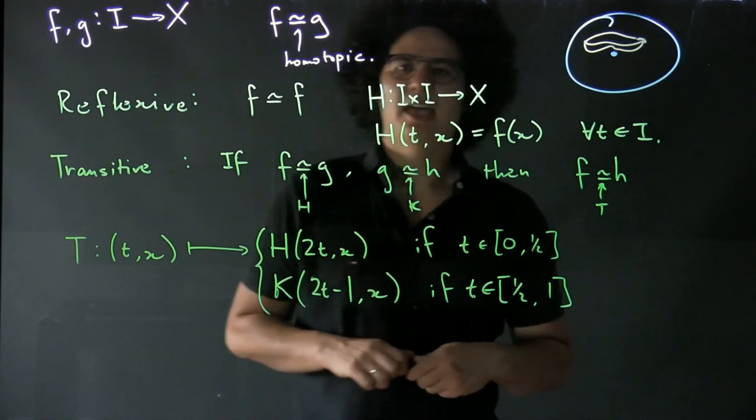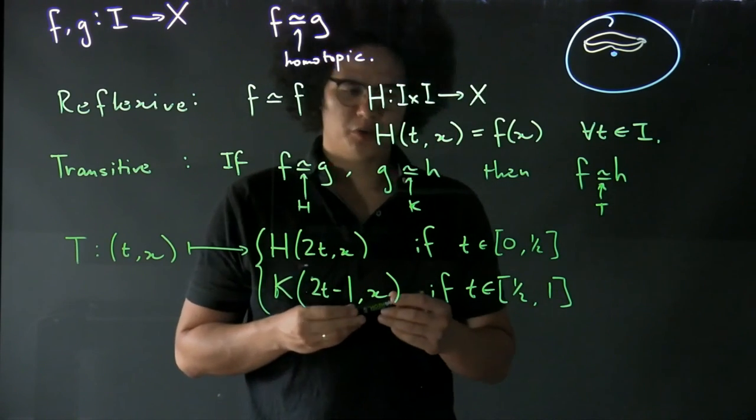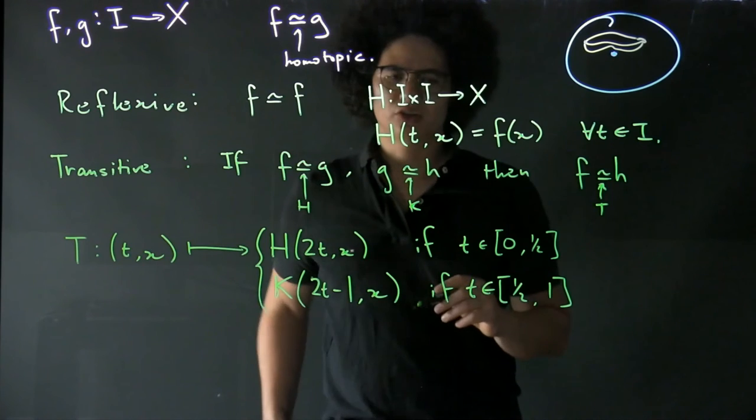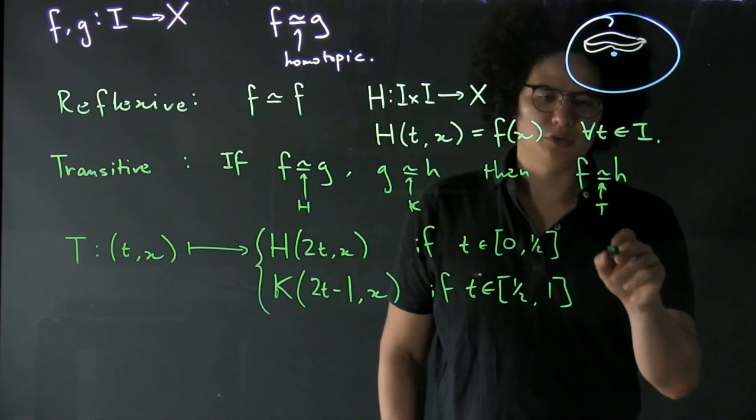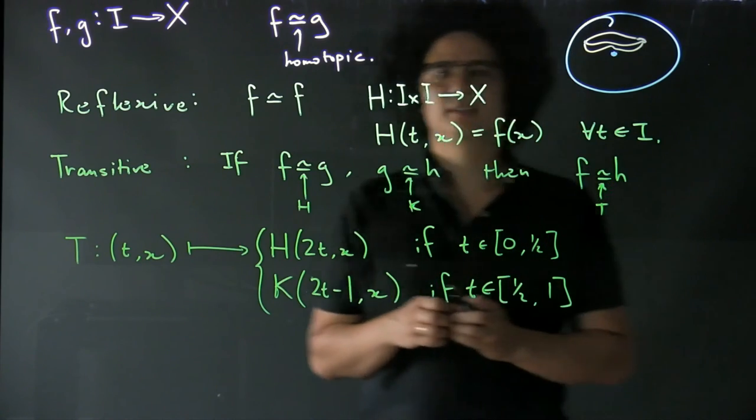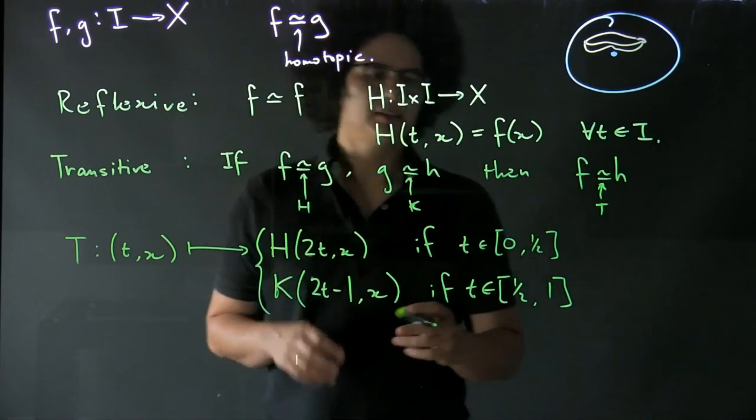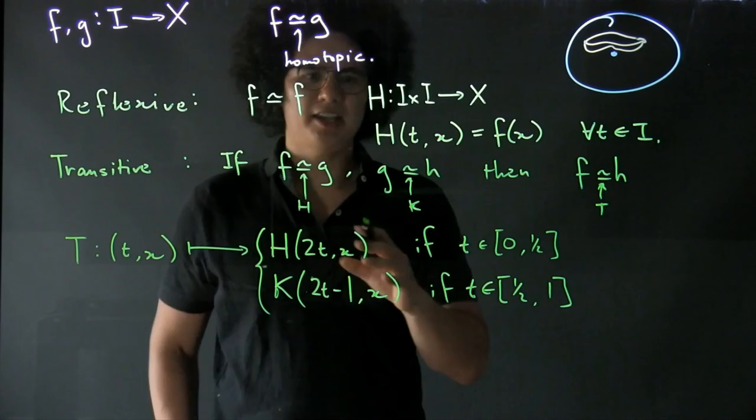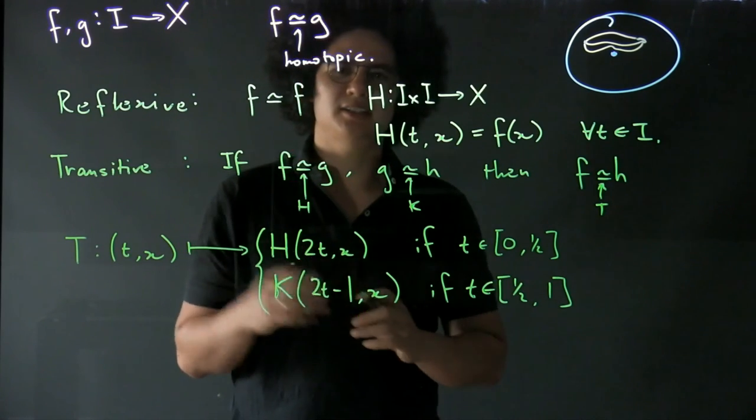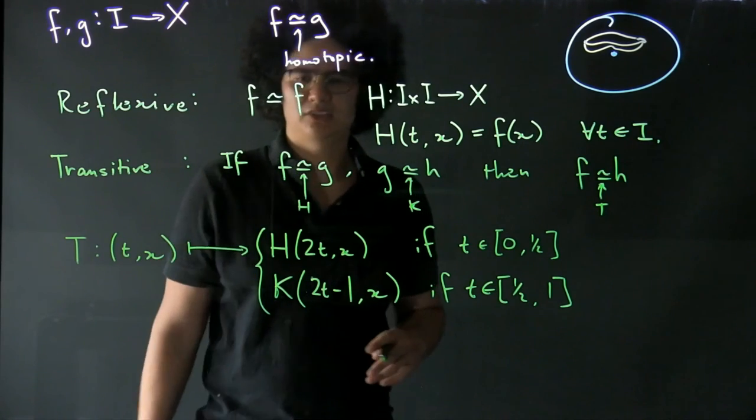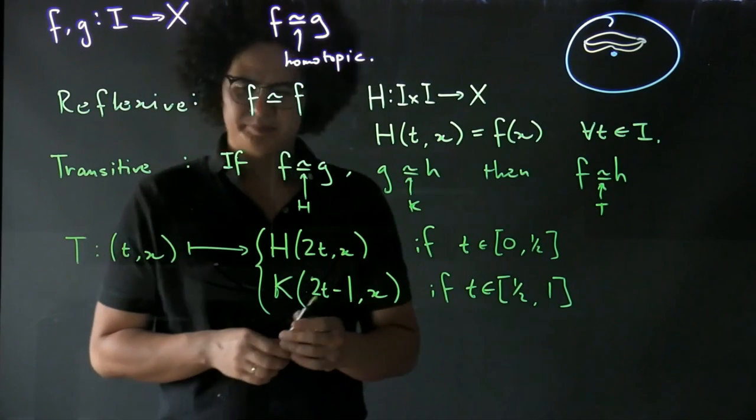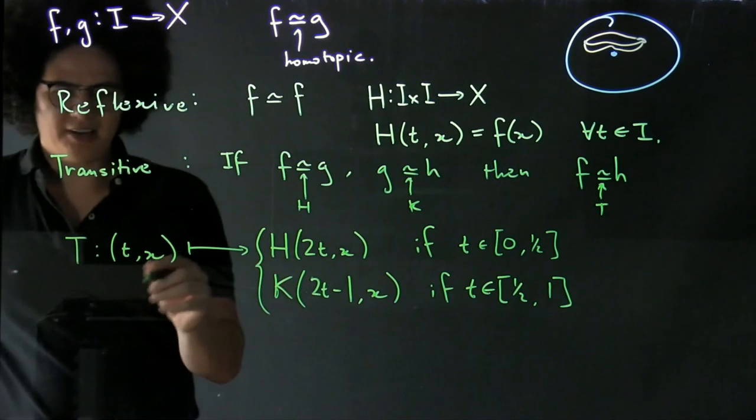And that's a consequence of something you should know from point-set topology, which is that if you glued two closed sets, if you have a function defined on the union of two closed sets and it's continuous on each of those sets, then it's continuous on that union.